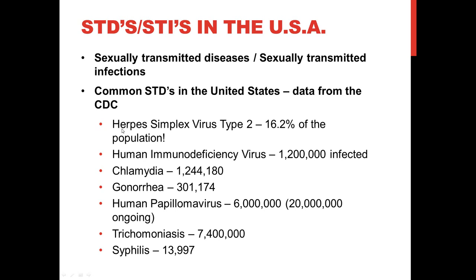Let's check out our list. Herpes simplex virus type 2, HSV type 2, causes genital herpes. About 16.2% of sexually active adults in the U.S. are infected — a staggering number that can be as high as 40% in some communities. You've got to be careful with HSV type 2 because once you have it, you've got it — it's not going away. HIV, human immunodeficiency virus, causes AIDS; about 1.2 million people in the United States are infected, and about 20% of them don't know they're infected.